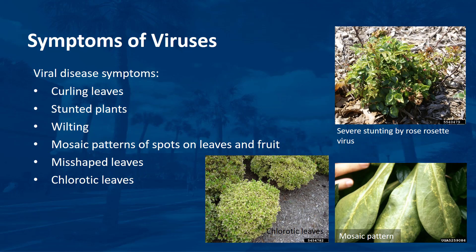Viral diseases are recognized by the symptoms on the plant. Symptoms depend on the type of virus, the type of plant, and environmental conditions. Viral disease symptoms include curling leaves, stunted plants, wilting, mosaic patterns of spots on leaves and fruit, misshaped leaves, and chlorotic leaves.